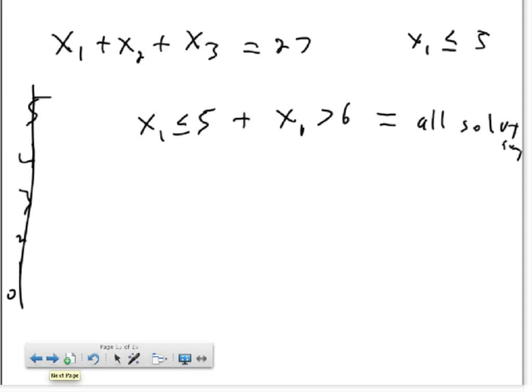From the first problem, we know that all possible solutions to this equation given no conditions is 29 choose three. And we know how to find the number of combinations where x1 has more than six things in it by the problem we just did, where we allot six to x1 and then take the remaining 21 elements and choose three from them.